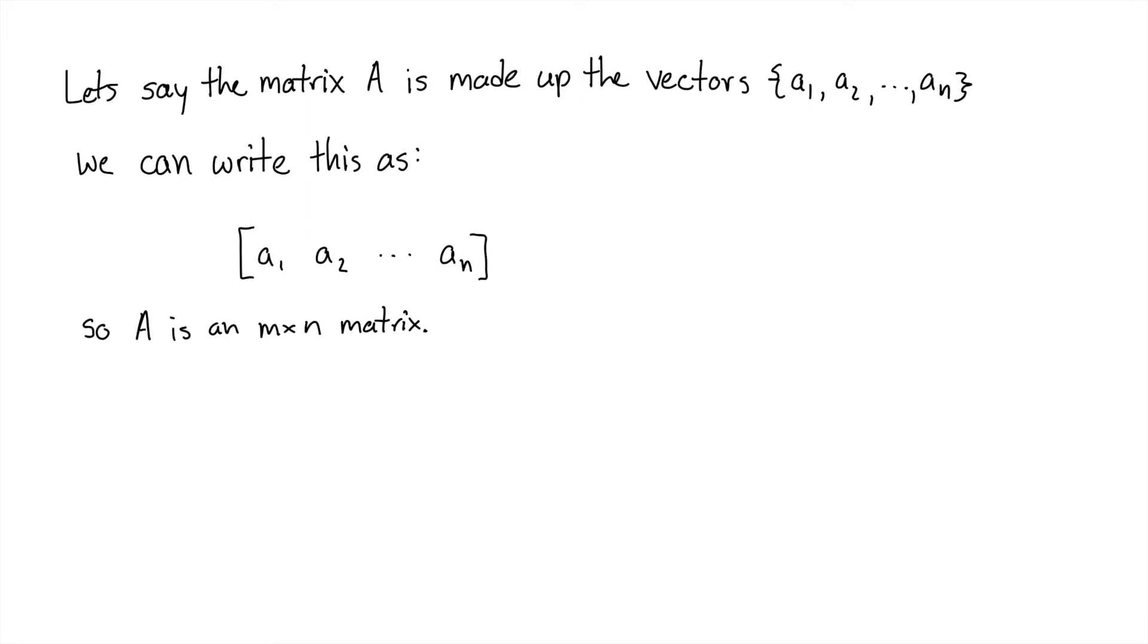Let's say the matrix A is made up of the vectors A1, A2, all the way through AN. Then we can write this as a matrix, as A1 vector A1 as the first column, A2 as the second column, all the way up to AN as the nth column. And so, we say that A is an M by N matrix because it has M rows and N columns.